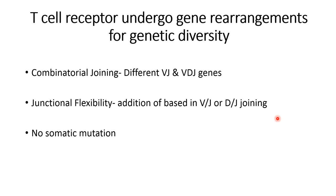Similar to immunoglobulins, the T cell receptor also undergoes gene rearrangement for genetic diversity. The gene rearrangement includes combinatorial joining and junctional flexibility, but there is no somatic mutation as compared to antibodies.